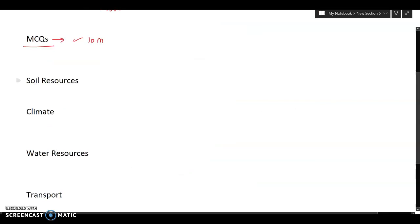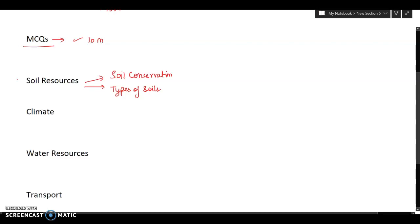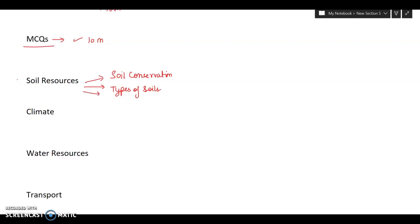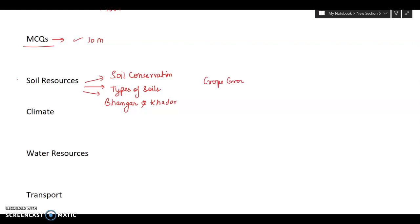The first chapter you must prepare is soil resources. This is a very easy chapter. For this, questions on soil conservation, then types of soils and the differences. We have got black soil, red soil, alluvial soil, laterite soil, their properties. We have leaching property for laterite soil, the water retention property. So just have a look at it. Then we have different types of soils like bhangar, khadar. Have a look on it.